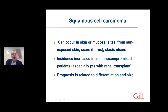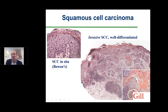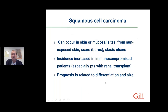The incidence — meaning the rate of new cases — increases in immunocompromised patients, especially patients with a transplant like a renal transplant or other types of immunocompromised conditions. The prognosis is directly related to differentiation. A well-differentiated tumor has a better prognosis. The risk increases when differentiation decreases, such as with poor differentiation. The prognosis is also associated with size.